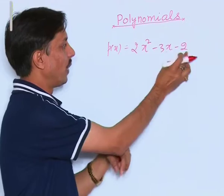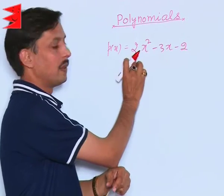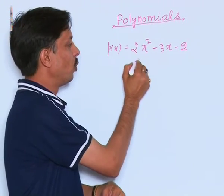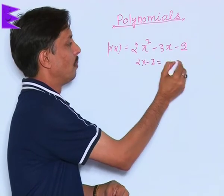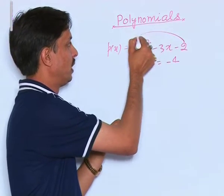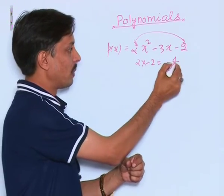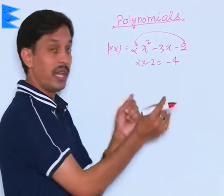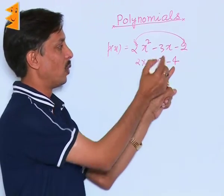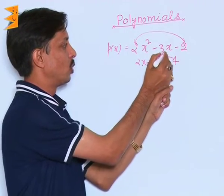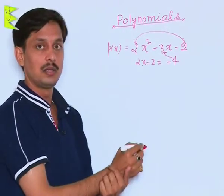Suppose you want to factorize that. 2 times 2 is 4, 2 into -2 is -4. First of all we need to calculate the product of these two, which is -4. For this -4, we need to take two such values whose product is -4, but its difference should be -3.